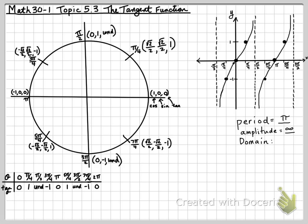The domain, well, it's all x's, except where there's an asymptote. So it's going to be x is equal to R, except x cannot equal pi over 2, plus every pi times n, where n is any integer.